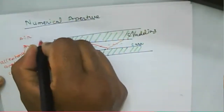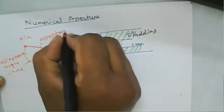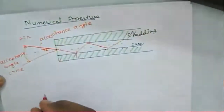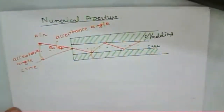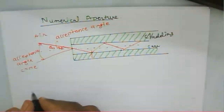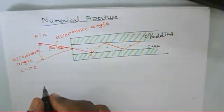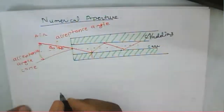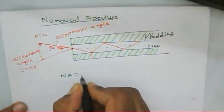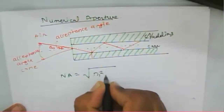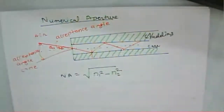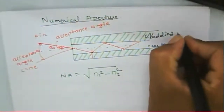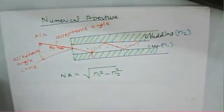This particular angle is called the acceptance angle of the fiber, denoted as theta_a. For the given acceptance angle, we have obtained the equation for numerical aperture: NA = √(n1² − n2²), where n1 is the refractive index of the core and n2 is the refractive index of the cladding.